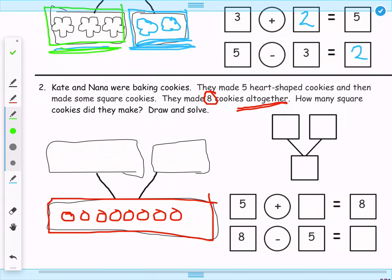Now, we also know that 5 of those cookies were heart-shaped. And then some of them were square. So we're going to come over here and draw 5 heart-shaped cookies: 1, 2, 3, 4, and 5.